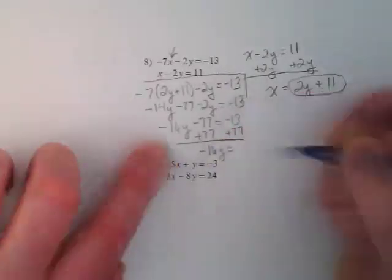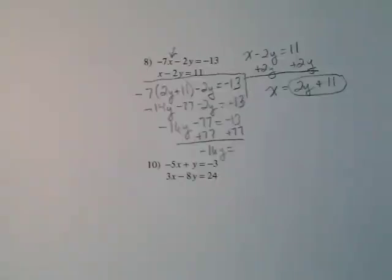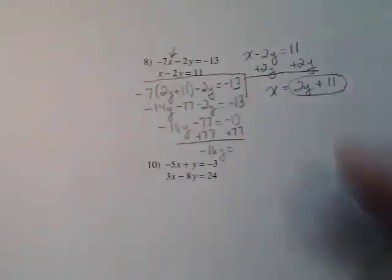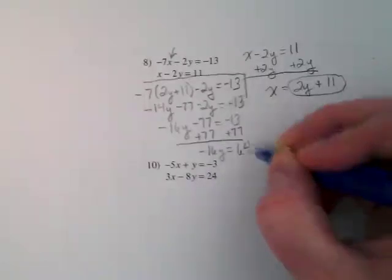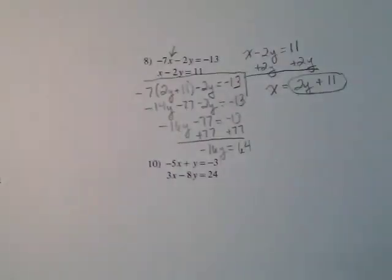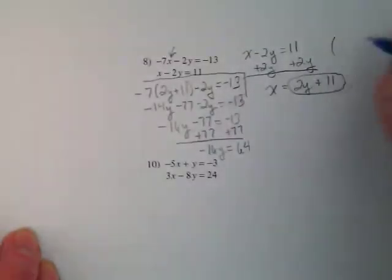I get negative 16y is equal to, I'm not going to trust my muddied mind, is it 64? Oh that makes sense because 16 is going to divide into it. And 64 divided by 16 is 4. So in our xy pair we have that y is equal to negative 4.